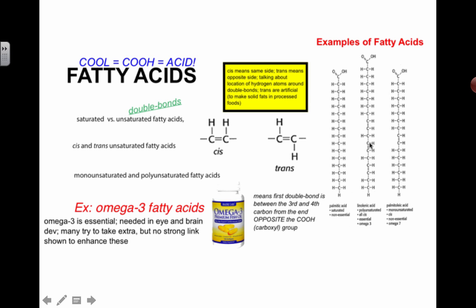Here are three examples of fatty acids. Looking at this first one — can you tell if it's monounsaturated, unsaturated, or saturated? If you look at it, there are no double bonds in the hydrocarbon chain. The carboxyl group doesn't count. Since the hydrocarbon chain right here has no double bonds, this is actually a saturated fatty acid.